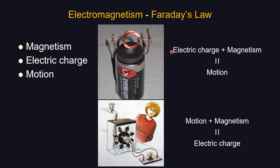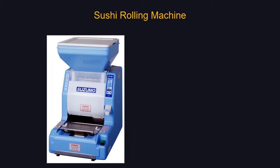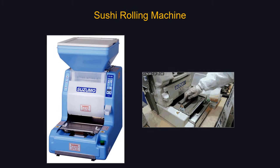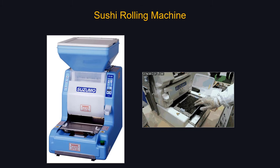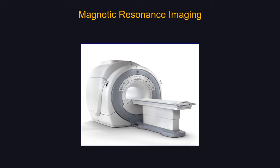If I show you equipment called SRM, the picture doesn't tell you what it does. If I tell you it stands for sushi rolling machine, the name is self-explanatory. Similarly, MRI stands for magnetic resonance imaging, so you can guess it has something to do with magnetism, resonance, and producing images. Let's look at the first part: M, magnetism. As it turns out, we need two types of magnets — one large, one tiny.